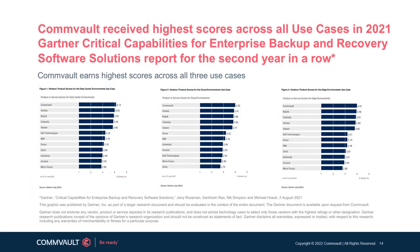In addition to the Magic Quadrant, Commvault Complete Backup and Recovery software has received the highest scores across all use cases — data center, cloud, and edge environments — in the Gartner Critical Capabilities for Backup and Recovery Solutions report. For data center environments, we scored 4.13 out of 5; cloud environments scored 4.02 out of 5; and edge environments scored 4.01 out of 5. We've built up our support for cloud, core, and edge to help ensure our customers can protect and reliably recover their data anytime, anywhere. Our broad portfolio of intelligent data services is uniquely positioned to solve the most complicated data challenges of protection, security, compliance, and more across cloud, hybrid, and on-premises environments. Essentially, this means that we enable our customers to protect their data the way they want, no matter where it lives.